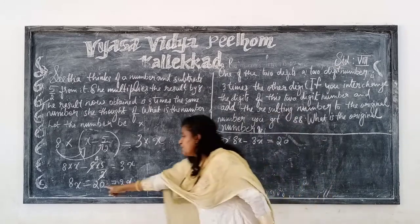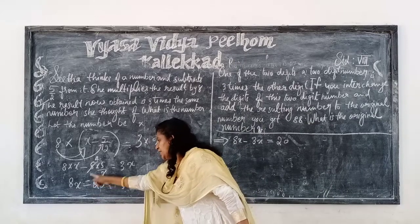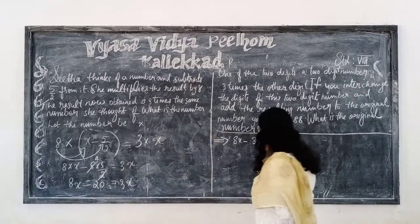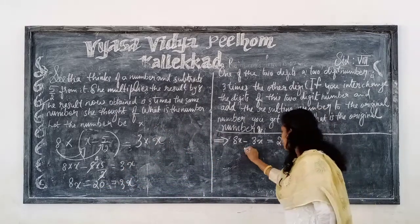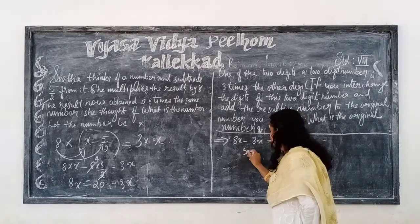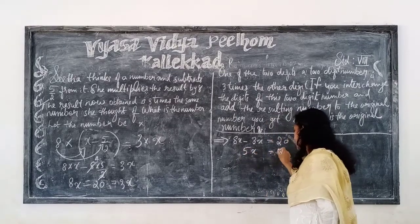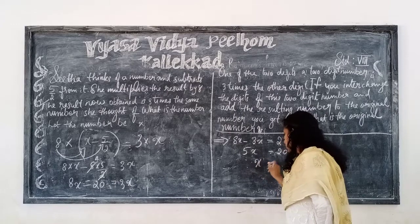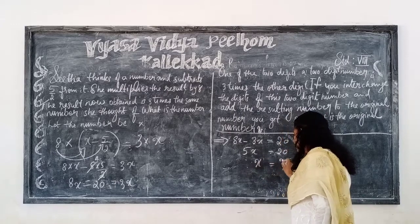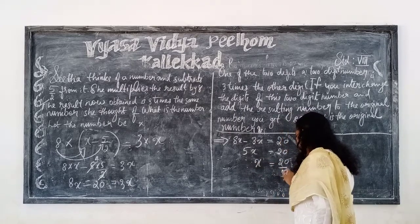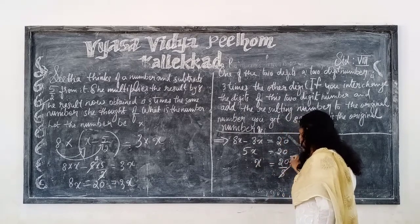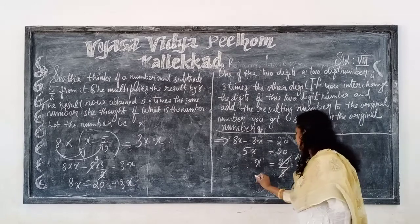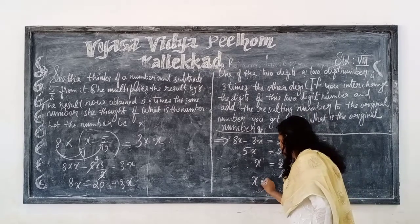So 8x minus 3x equals 20. Take minus 20 to the other side — we get plus 20. So 5x is equal to 20. Therefore x equals 20 by 5. Cutting off by 5, we get x equals 4.